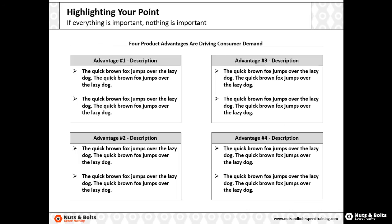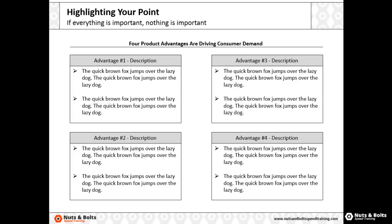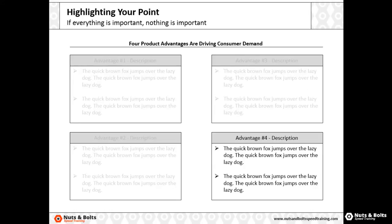Here's another example of something I see all the time: a layout where everything is highlighted. If everything is important, nothing is important — so you're better off not highlighting anything. If this was your slide and you wanted to highlight advantage number four in the lower right-hand corner, you could simply change the color of the title box, which brings your eye to that box, or dim the font color of all the other boxes, which again brings advantage number four to the spotlight.